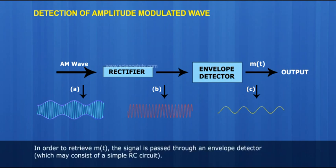In order to retrieve m(t), the signal is passed through an envelope detector which may consist of a simple RC circuit.